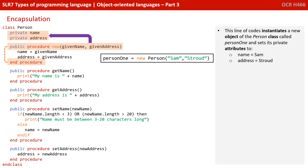So, let's have a look at this in a coded example. This line of code in the black box instantiates a new object of the person class called person1, and it initially sets its private attributes to name equals Sam and address equals Stroud.